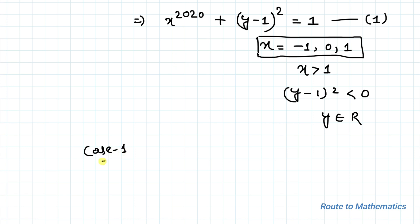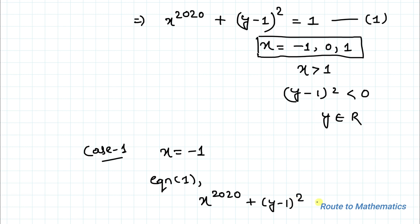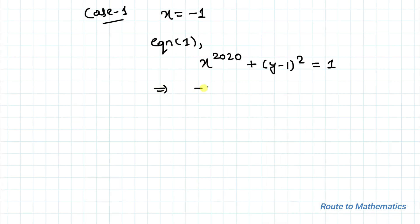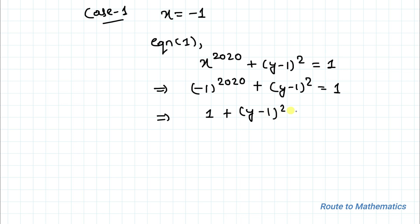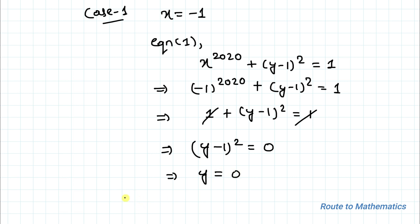So we found x equals minus 1, 0, and 1. Now let's find the values of y. In Case 1, when x equals minus 1, substituting into equation 1 gives (minus 1) to the power 2020 plus (y minus 1) squared equals 1, which is 1 plus (y minus 1) squared equals 1. The 1s cancel, so (y minus 1) squared equals 0, giving y equals 1.